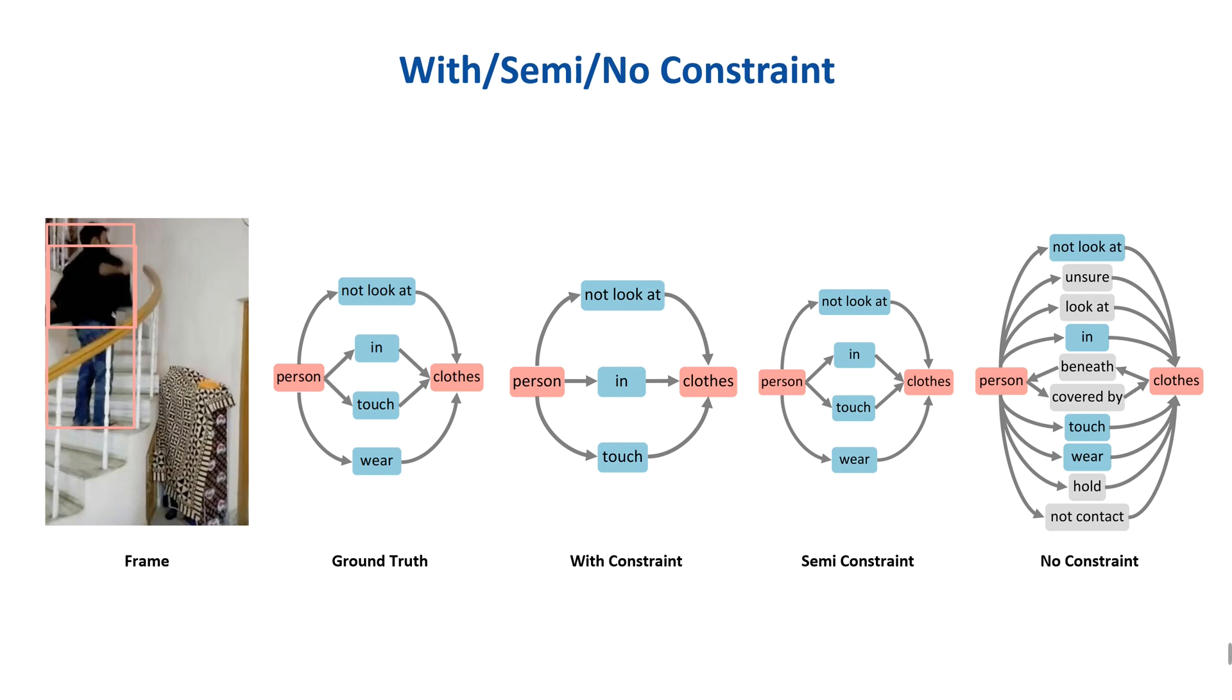To tackle this problem, we propose a new strategy named semi-constraint, allowing a pair has multi-predicates, such as person-in-clothes and person-touch-clothes. The predicate is regarded as positive only if the corresponding relationship confidence is higher than the threshold.